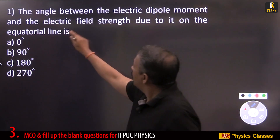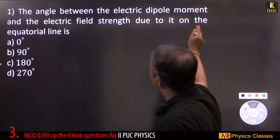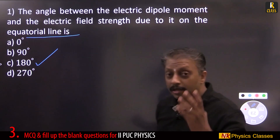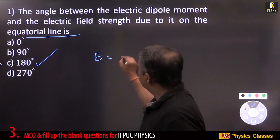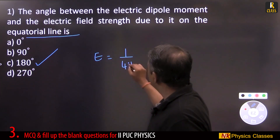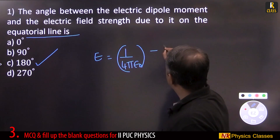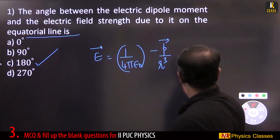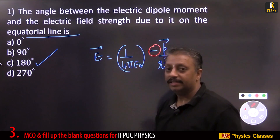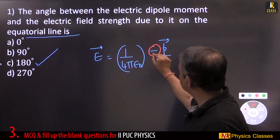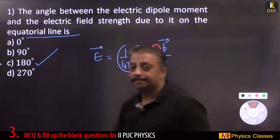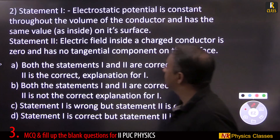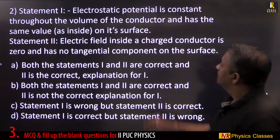The angle between electric dipole moment and electric field strength due to it on the equatorial line is 180 degrees. Recall the expression for electric field on the equatorial line: E = (1/4πε₀)(−p/r³). The minus sign indicates the electric field is opposite to the dipole moment direction — hence 180 degrees.